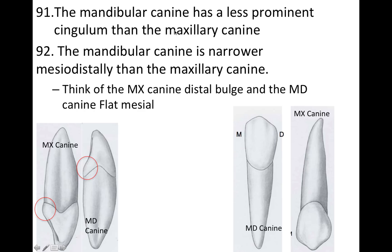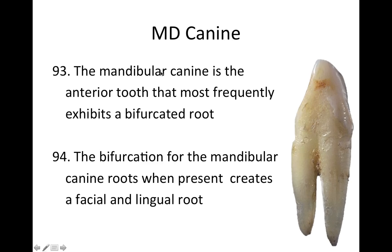The mandibular canine has a less prominent cingulum than the maxillary canine. Here I have both teeth pictured — the maxillary canine oriented downward and the mandibular upward — and you can see the maxillary cingulum is a little more prominent. The mandibular canine is also more narrow mesiodistally than the maxillary canine. To remember that, think about the distal bulge on the maxillary and the flat mesial on the lower.